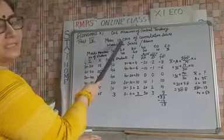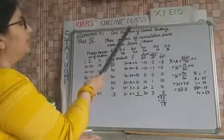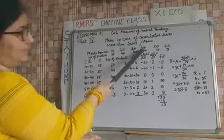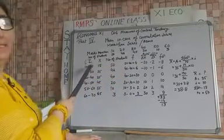Till now we have discussed about continuous series, direct method, shortcut method and step deviation method. Now there is one more kind of continuous series that is more than series and it may also be called as above in which the lower limit is given.